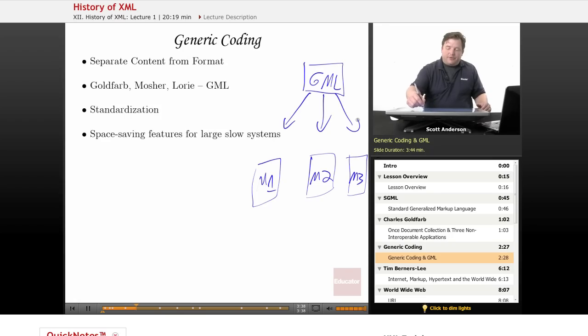It could be sent to all three machines, and each machine would have its own interpreter that would be able to convert the generic form into a form that was customized for that particular application or machine. That way they could store all the information in one format in one place, and then simply customize the information for however a particular application needed to use it.